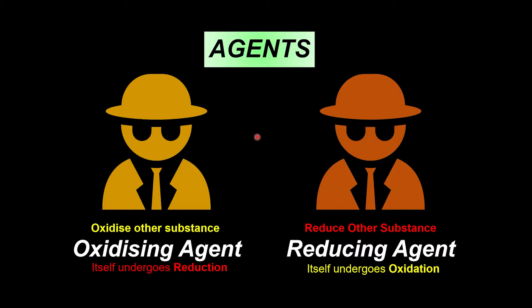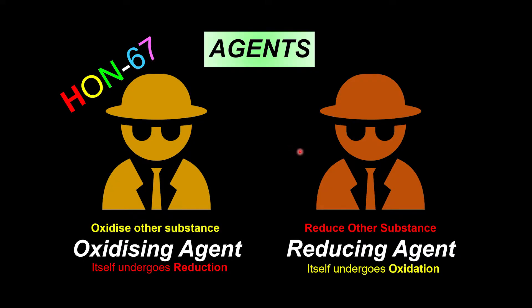In all the movies, agents have their own fancy names — like 007 for a hitman. We also have names for our agents: the oxidizing agent is named Horn 67, and our reducing agent is named SM2. Now let's illustrate with two chemical substances, A and B.